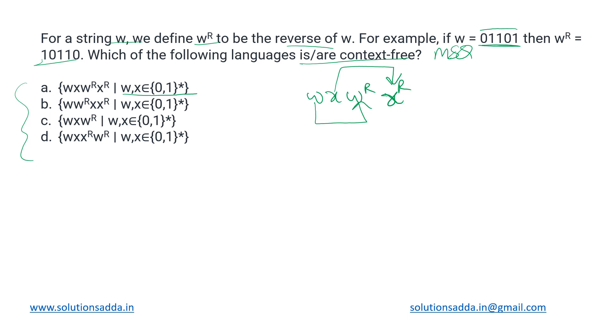If we try to accept this language using a PDA, because we are talking about context-free languages, we'll be using pushdown automata. In that stack, let's say we push this string w, then we'll be pushing x. But now there is no way to compare this w^r against w because x will be on the top of this stack.